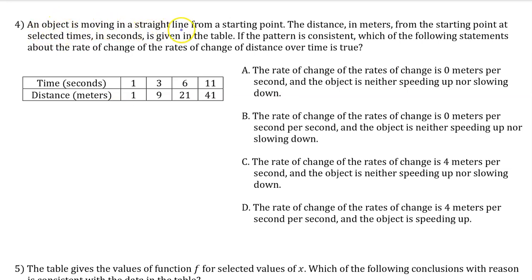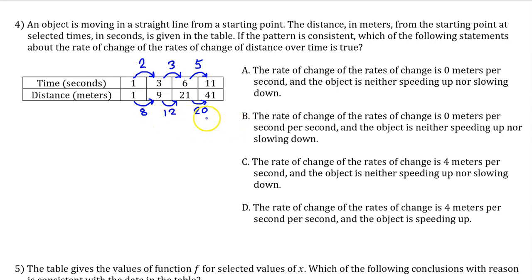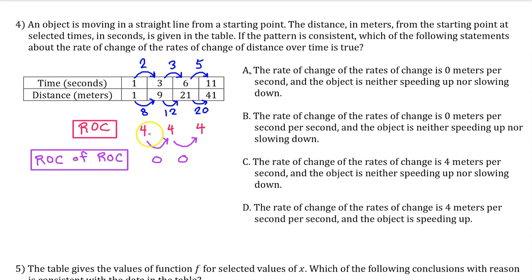Number 4. An object is moving in a straight line from a starting point. The distance in meters from the starting point at selected times in seconds is given in the table. If the pattern is consistent, which of the following statements about the rate of change of the rate of change of distance over time is true? The input intervals are not equal length, so we calculate the rate of change: 8 divided by 2 is 4, 12 divided by 3 is 4, and 20 divided by 5 is 4. The rate of change is constant, so the rate of change of the rate of change is 0.